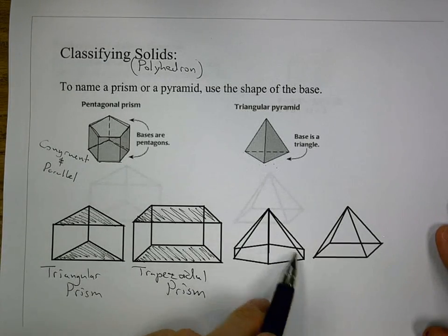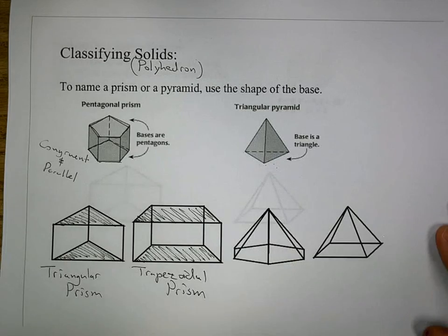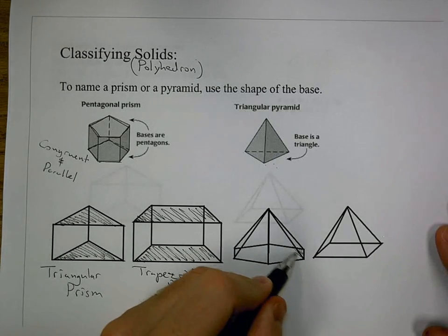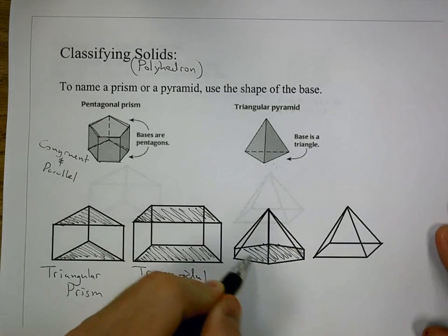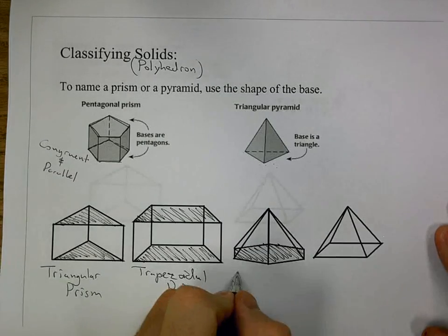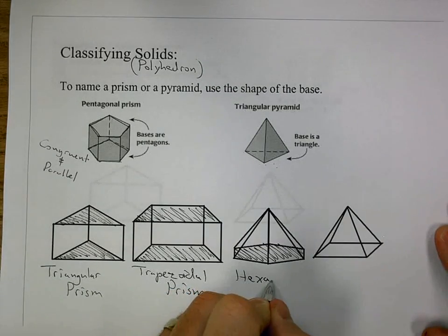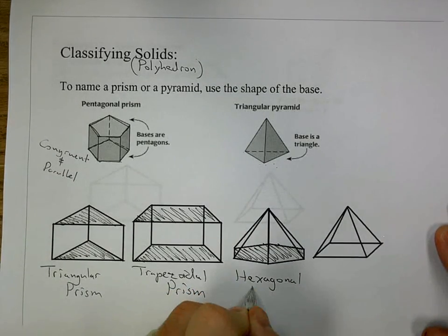Okay, next one we look at, we have one base, it goes up to a point. So it's going to be a pyramid, and if we look, our base is a hexagon. So that would be a hexagonal pyramid.